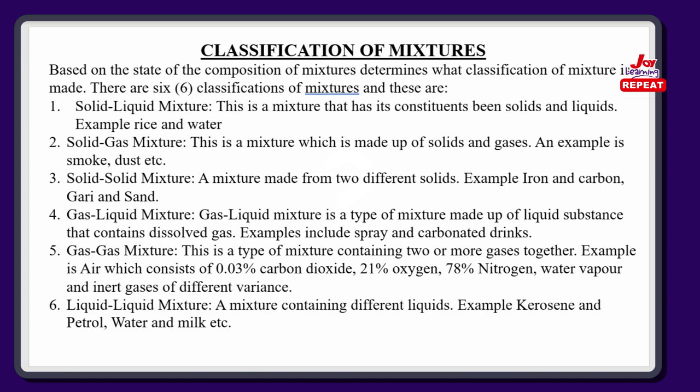The fifth is gas mixture — a type of mixture containing two or more gases put together. An example is air. Air has many compositions: about 0.03% carbon dioxide, 21% oxygen, 78% nitrogen, and a bit of water vapor and other gases that vary. The last type is liquid-liquid mixture, which I'm sure you have done at home. It is a mixture containing two different liquids. Examples include petrol and kerosene, and water and milk.